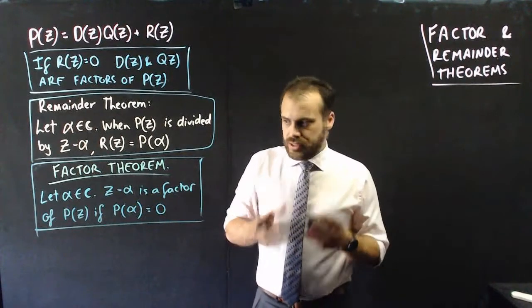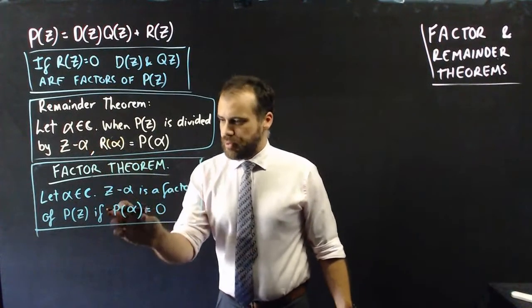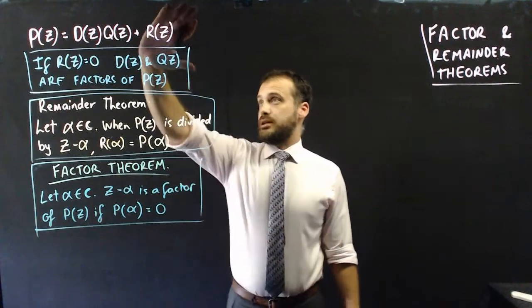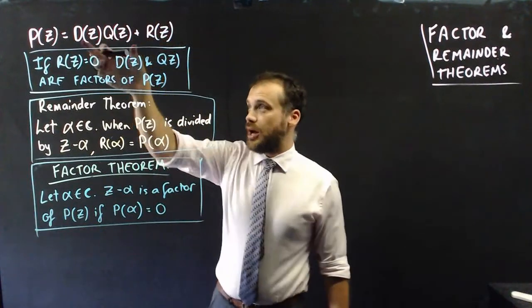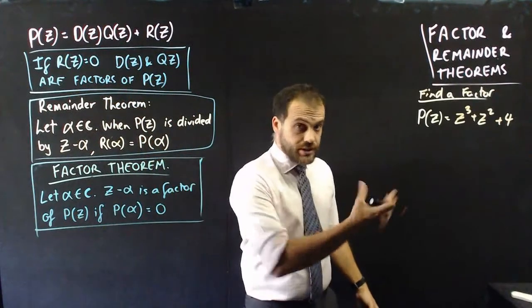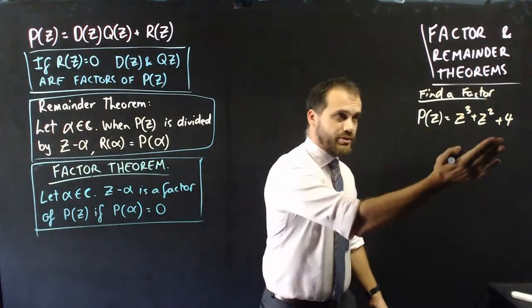Why would that be the case? It's because we know that P alpha is equal to the remainder. So if P alpha is equal to zero, then the remainder is zero. And if the remainder is zero, then we have a factor. We could say that if the remainder is zero, then we have a factor. And the upshot of this and something you've done before is that if you want to find a factor of anything, you can just sub values into it until the answer is zero.